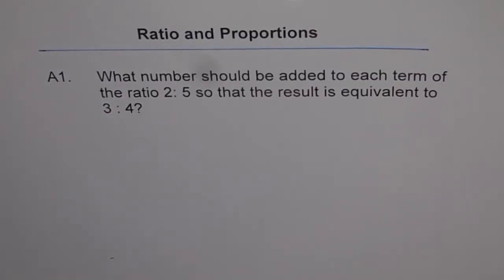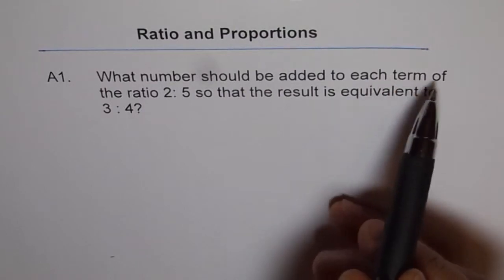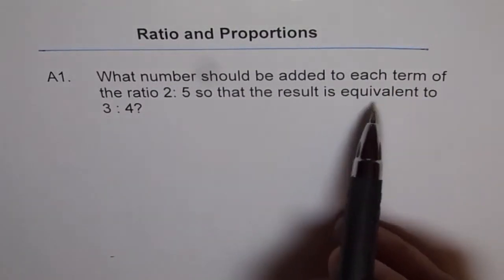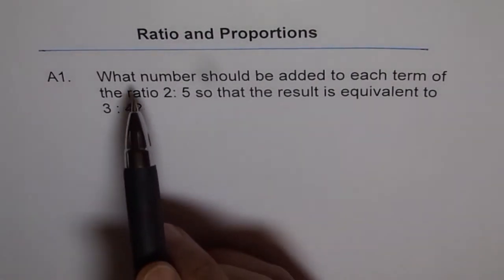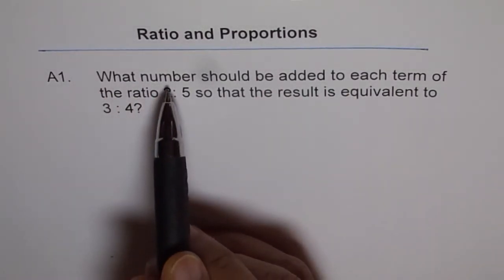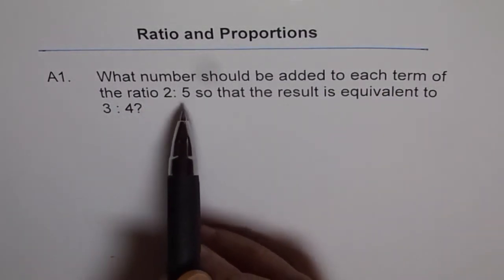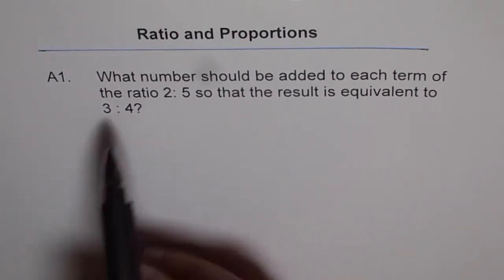Here we have few interesting application problems on ratios. The first one, A1. What number should be added to each term of the ratio 2 to 5 so that the result is equivalent to 3 to 4? Do you understand the question? What number should be added to each term of the ratio 2 to 5 so that the result is equivalent to 3 to 4?